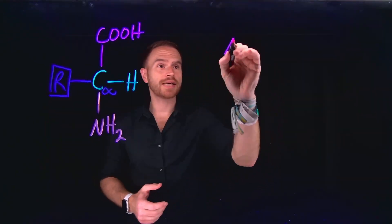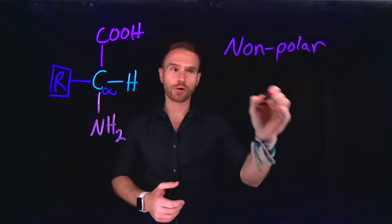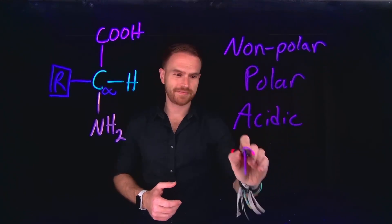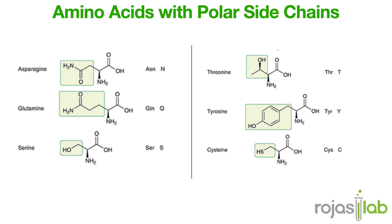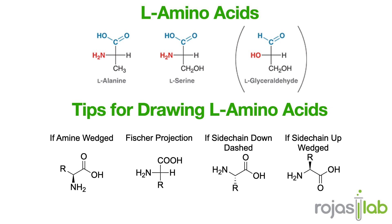These side chains can be classified into four different groups: nonpolar, polar, acidic, and basic. The structures of those 20 amino acids are shown on the screen, together with the accepted three-letter abbreviation and one-letter abbreviation for each amino acid. Except for glycine, whose R group side chain is just another hydrogen atom, all of these amino acids are chiral, and typically nature employs only one enantiomer of each. The amino acids primarily observed in nature are called L amino acids because their Fischer projections resemble the Fischer projection of L-glyceraldehyde.